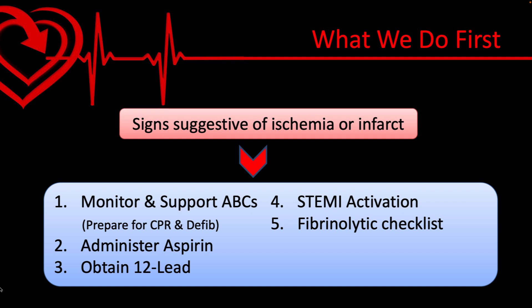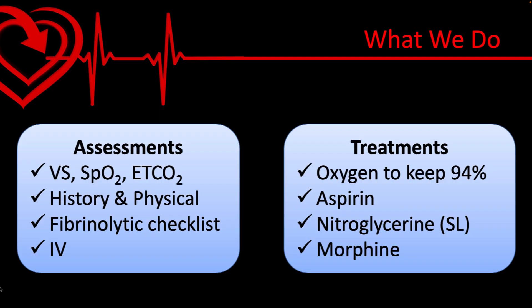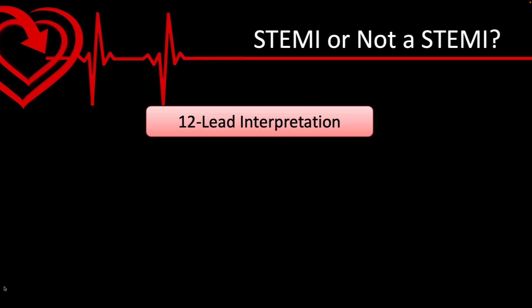We should also be collecting and completing a fibrinolytic checklist to determine if our patient is or is not a candidate for fibrinolytics. It's important to acquire a 12-lead ECG prior to the administration of nitroglycerin, as the vasodilation caused by nitro may hide the evidence of an MI. During this stage we're getting vitals, SpO2, end-tidal CO2, a history and physical, establishing an IV, oxygen titrated to stay at or above 94%, aspirin, nitroglycerin sublingual either a spray or a tablet, and morphine. The 12-lead is our best tool for early identification of an acute MI.